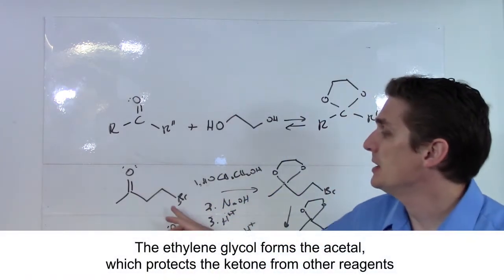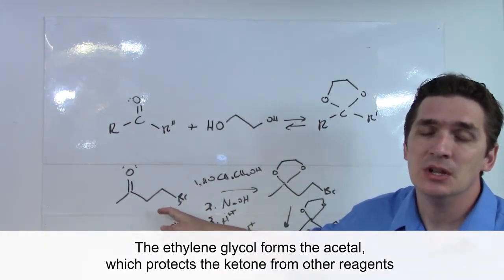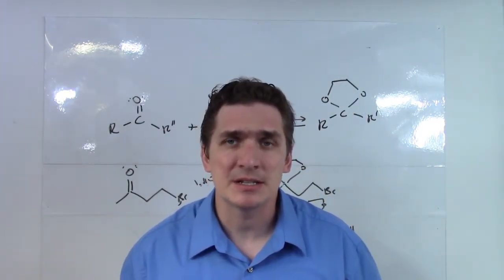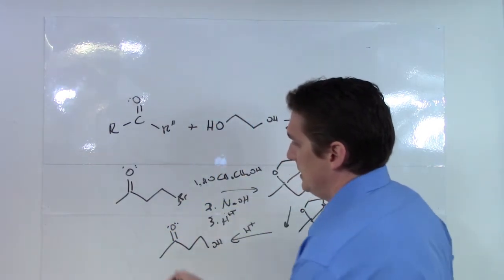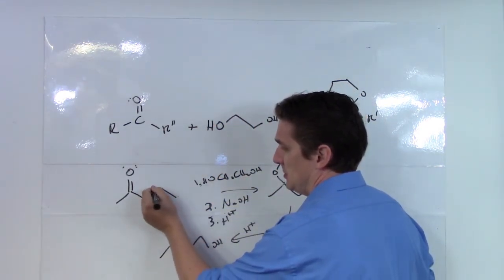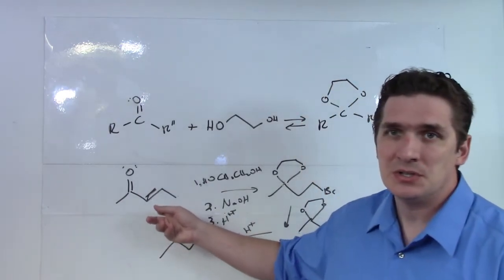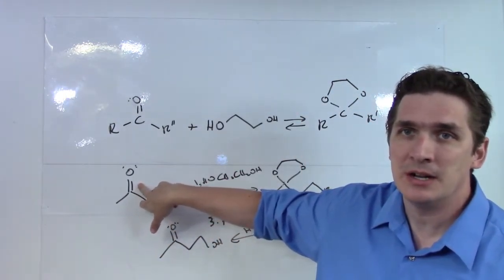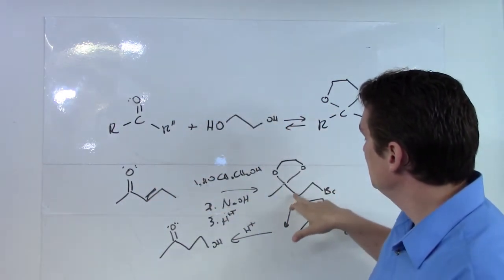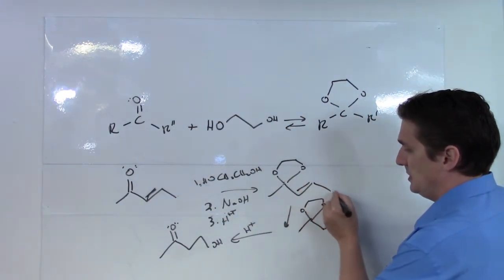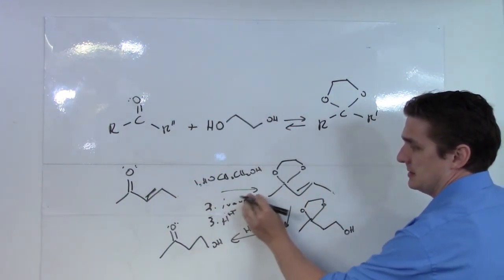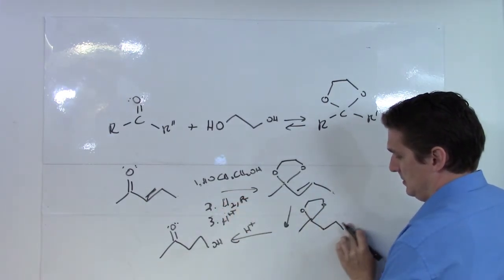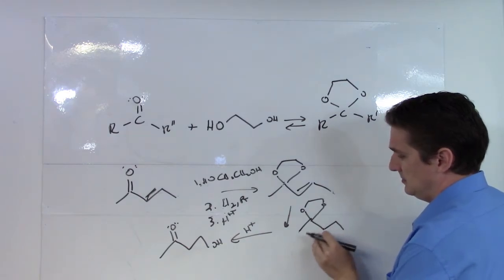This strategy applies to many other situations. For example, let's say we have a double bond we want to reduce. If we do H2/Pt directly, we'll reduce the double bond but we'll also reduce the ketone to give an alcohol. If we first form the acetal and then apply H2/Pt, we get the desired alkane with the ketone protected. Adding H+ at the end gets us back to the target product.